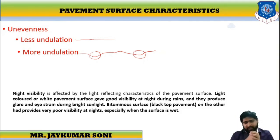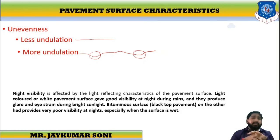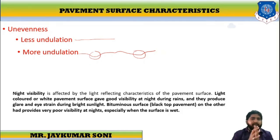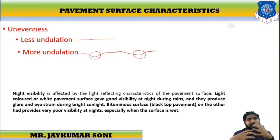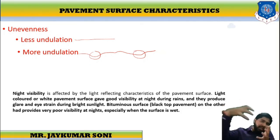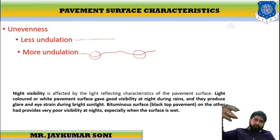F stands for friction, U stands for unevenness. Then comes light reflecting characteristics — how light is being reflected from the road surface when you are traveling at night. Night visibility is affected by the light reflecting characteristics of the pavement surface. If the pavement surface is light colored or white — concrete pavement — there will be good visibility. But due to white color, it can create glare in the eyes of a driver and the eye may suffer from strain issues.